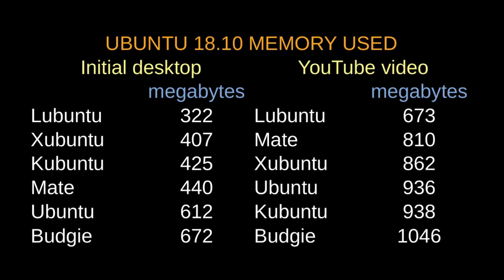I have a few observations. One is that GNOME 3.30 seems to have made considerable strides in reducing its resource requirements. Another is that while Ubuntu with the LXQt desktop is not as light as Ubuntu with the LXDE desktop was, it's still lower than any of the others. I found it interesting that Kubuntu came in third with just the desktop running, but fifth with the video running.